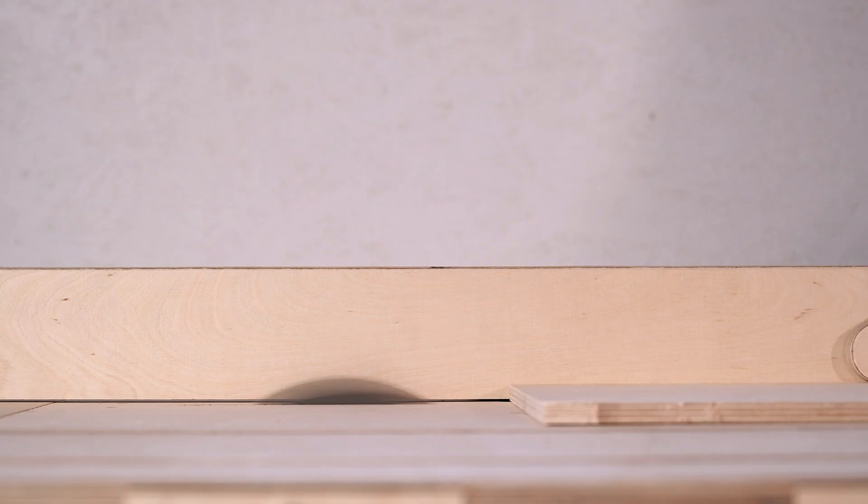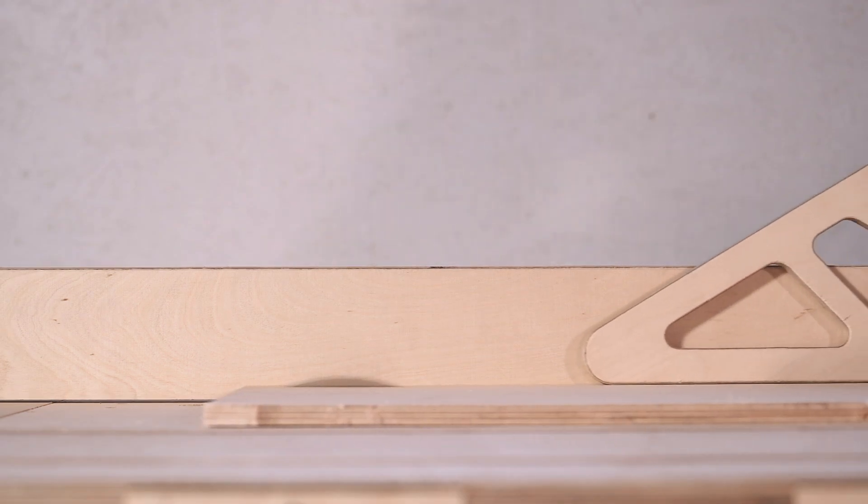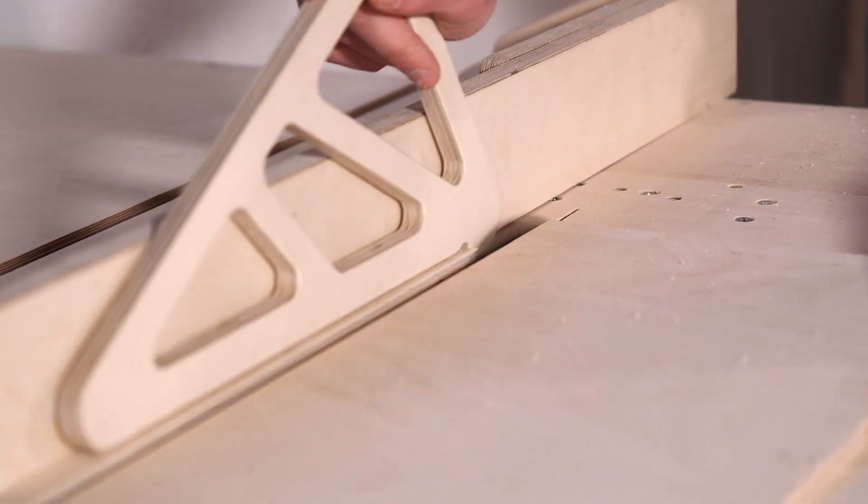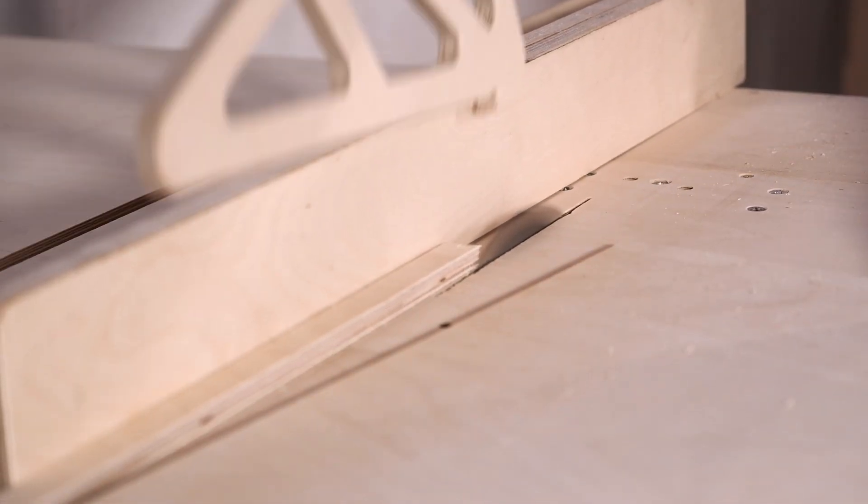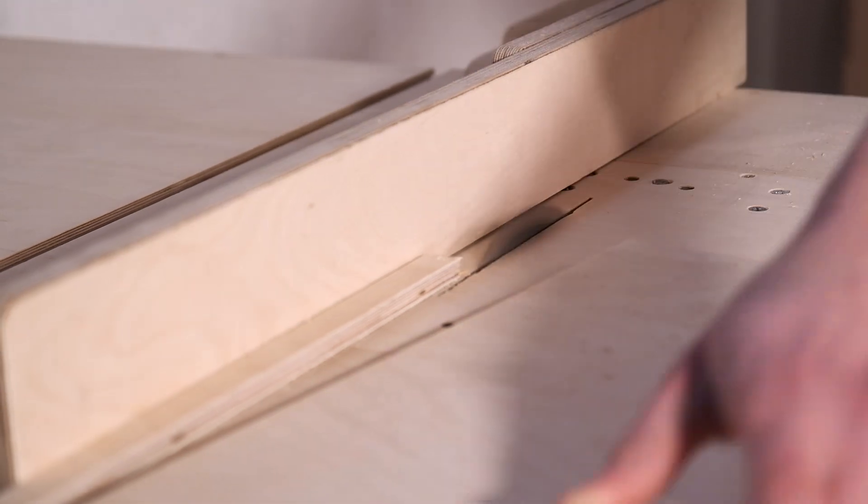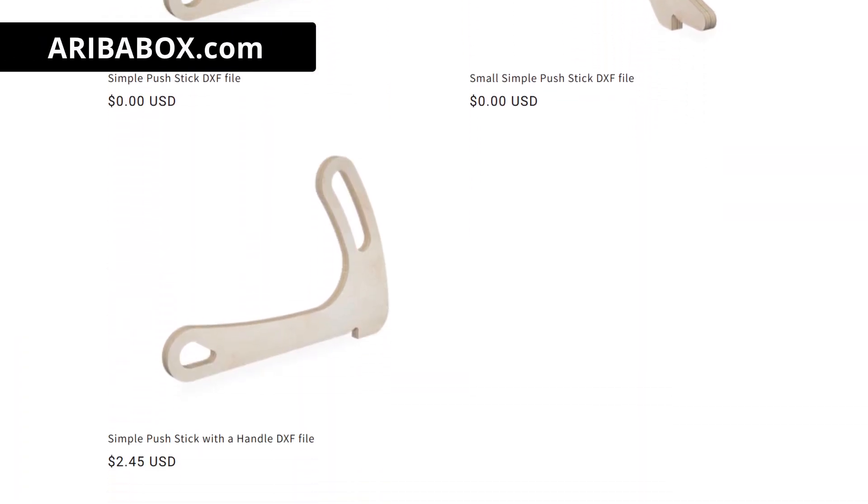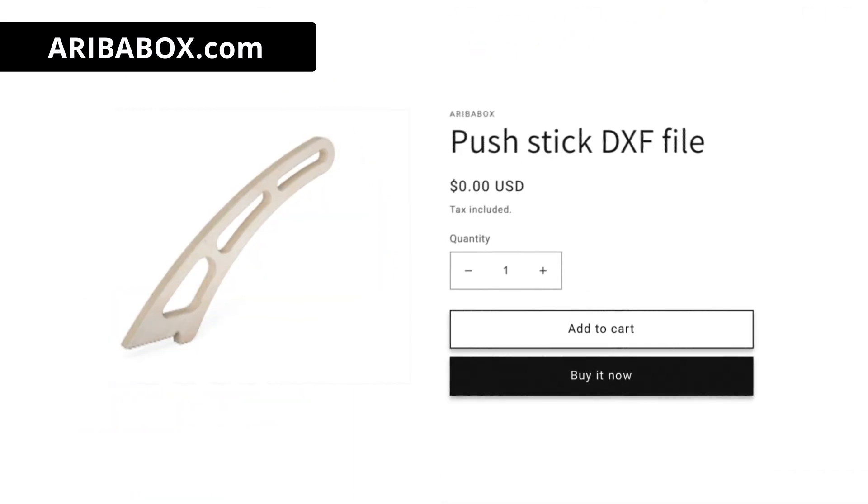While cutting the strips for the segments I used the triangle push stick. It gives more control over the workpiece, therefore making working on the table saw safer. I recommend you make some of these for your workshop. We have multiple push stick options available on the AribaBox website, so feel free to download your favorite one.